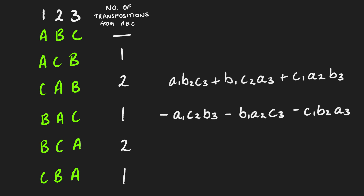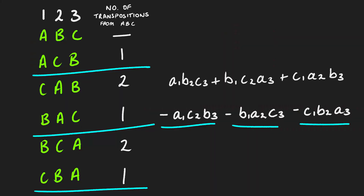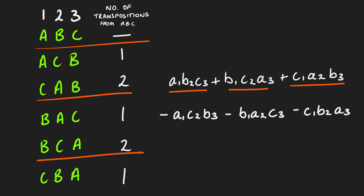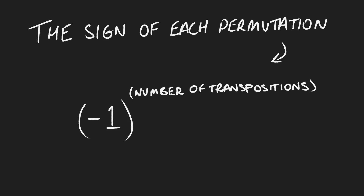So let's have a look at the determinant again alongside this new information. What is it that we can deduce is the pattern here? It's quite clear that all the permutations that require an odd number of transpositions are all negative in working out the determinant, and all of the permutations requiring an even number of transpositions are positive. And this is the pattern across all determinants.